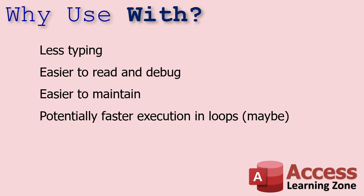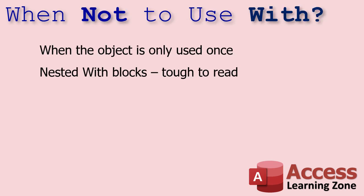So why use With? It's less typing — no need to copy and paste a bunch of stuff. It's easier to read and debug, and easier to maintain if you have to make changes. It's also potentially faster in loops. I'll say maybe on that, because I haven't tested it personally, but I've read it in many different books and articles. It makes sense that it would be faster because it only has to reference that one object once instead of repeatedly.